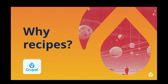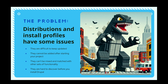Why do we need such a thing as recipes? For a long time we've had distributions and install profiles, but they've had issues. They can be difficult to keep updated — if you're the distribution maintainer or the site owner, you can have headaches around being blocked from applying security updates. There are also challenges because you have to know about the distribution before you start your project. Once you've created your project with one distribution, you can't go back and apply another, and you can't mix and match — they're mutually exclusive.